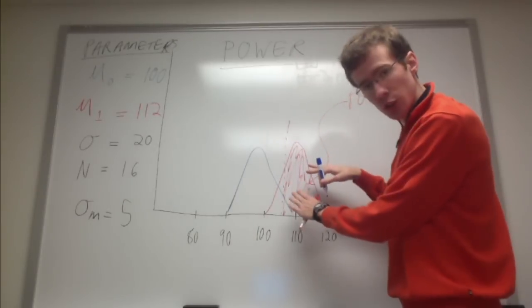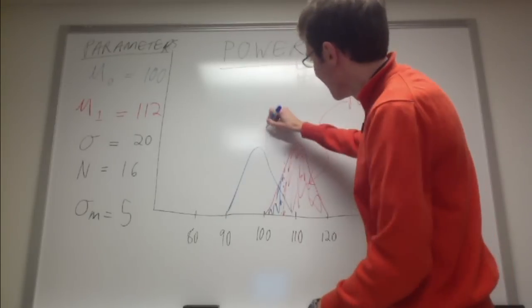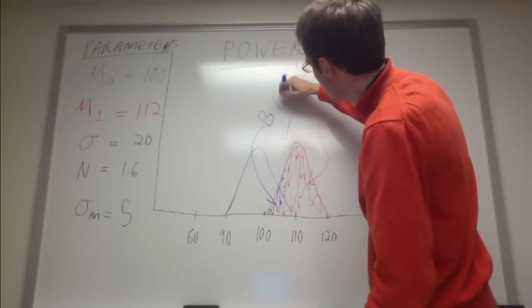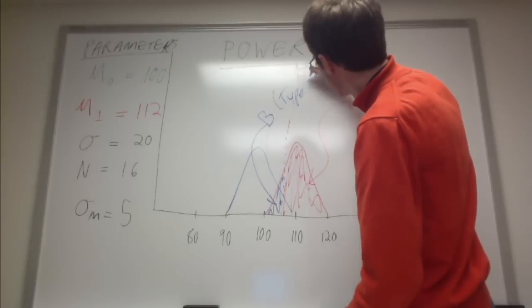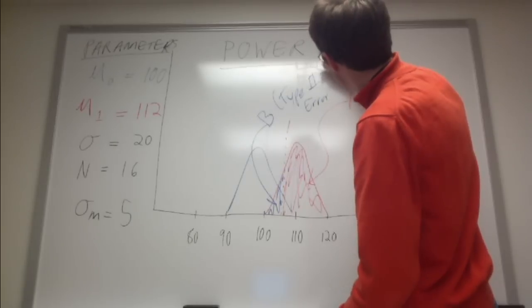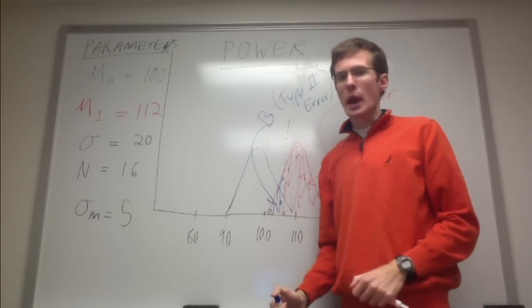Everything within this alternative distribution lying to the left of this cutoff, shaded in blue, is beta, or type 2 error. So mathematically defined, power is simply 1 minus beta, or the type 2 error.